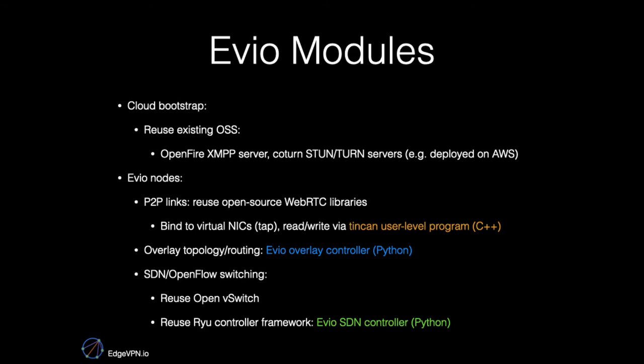For EVO nodes, we reuse open-source WebRTC libraries to create P2P links. We bind these P2P links to virtual network interface tap devices. Tap devices allow applications to use EVO transparently via sockets.